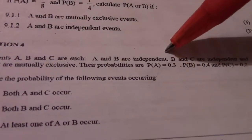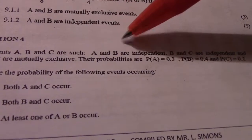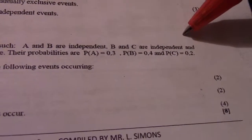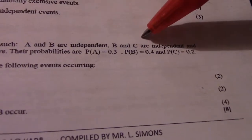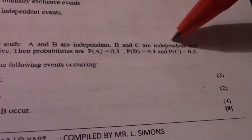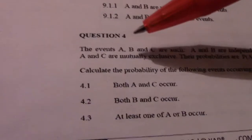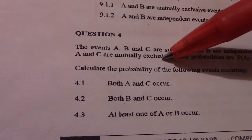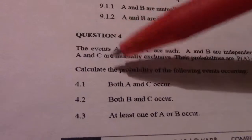Events A, B and C are such: A and B are independent, so probability of A and B equals probability A times probability B. B and C are independent, so probability of B times probability of C must equal probability B and C. And A and C are mutually exclusive, so the probability of A and C equals zero.